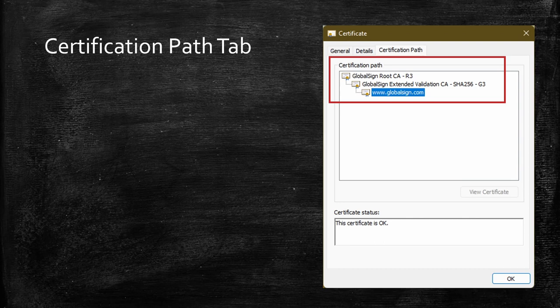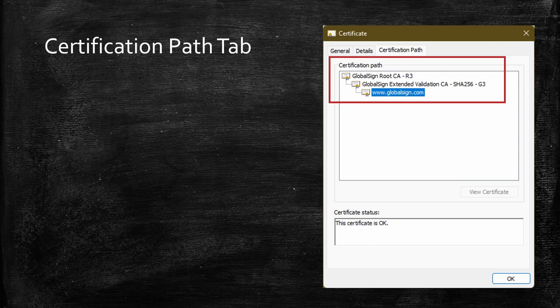The certification path tab shows the certificate chain. In this image, www.globalsign.com is the subject for whom the certificate was issued to. It was issued by an intermediate CA with the subject name GlobalSign Extended Validation CA SHA-256 G3, and at the top we see the GlobalSign root certificate which has GlobalSign Root CA R3 as a subject name. You would also see certificate status down below. In this screenshot, you are seeing certificate status as OK, indicating that everything is good with this certificate. If there is a problem, you would see a message describing the problem that was found, such as 'this certificate was revoked by its CA,' 'issuer's certificate was not found,' or 'certificate is not trusted.'